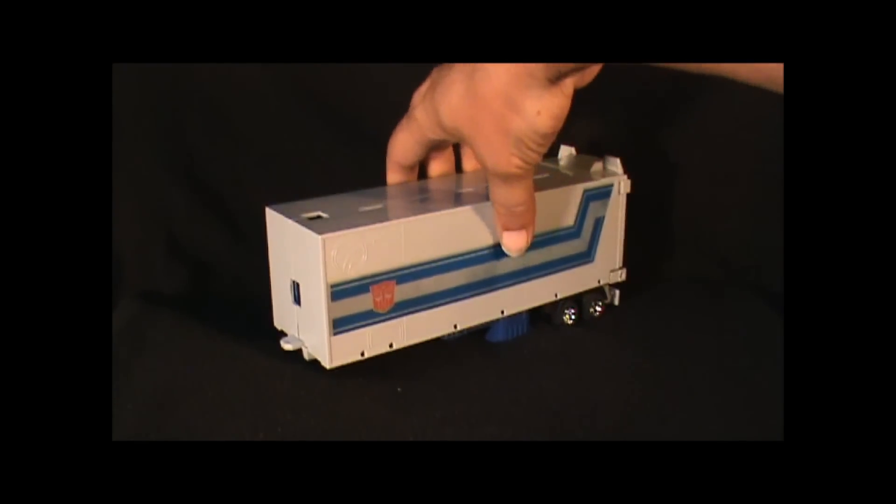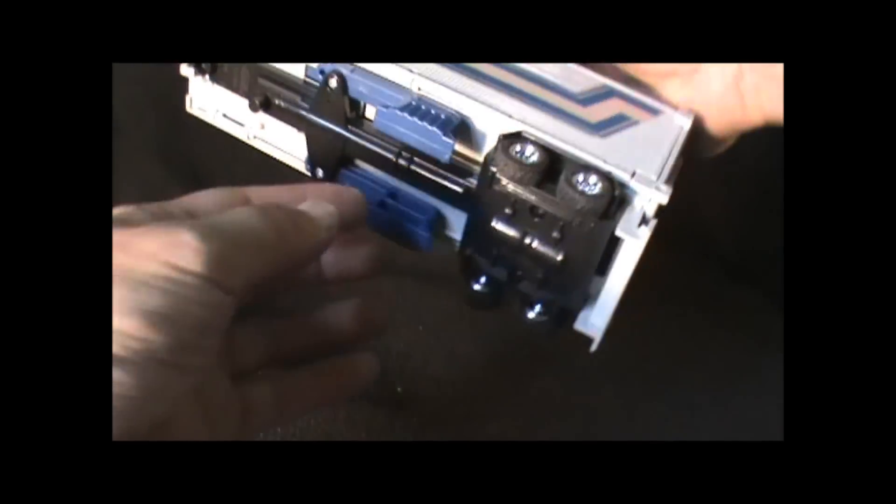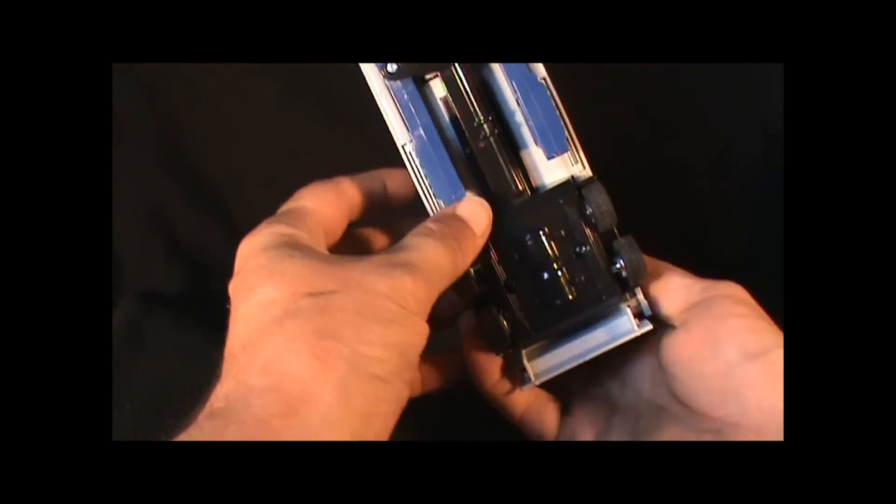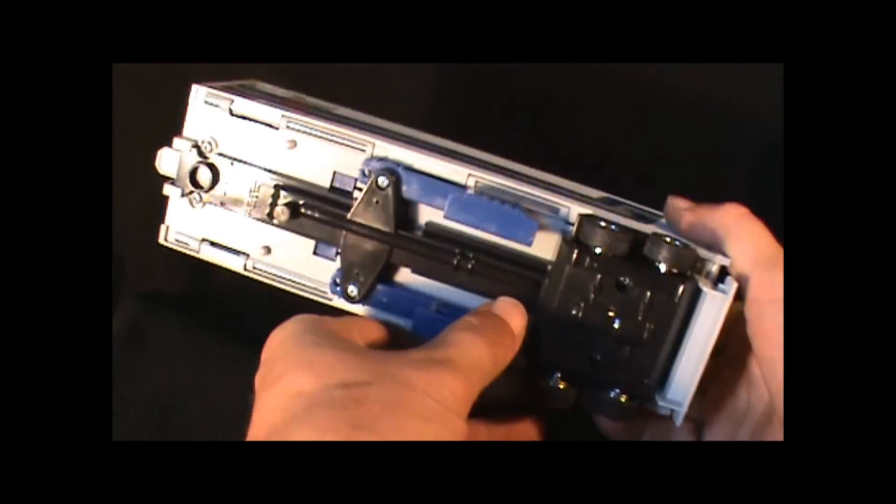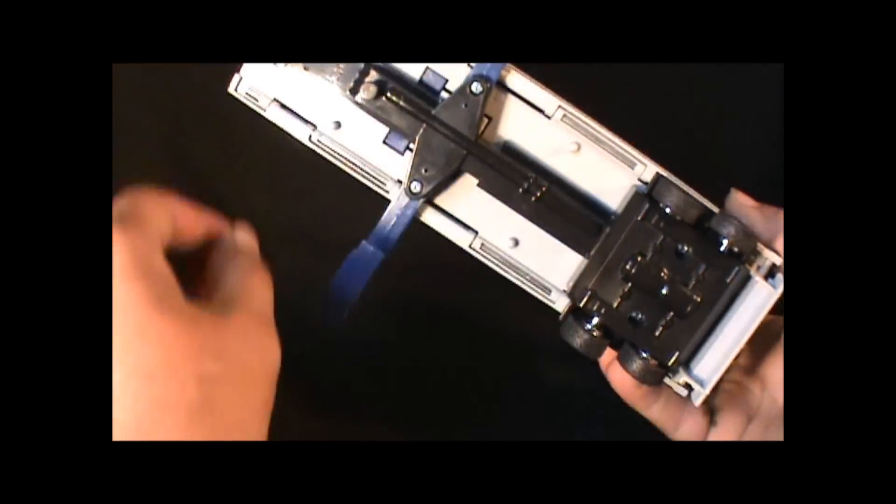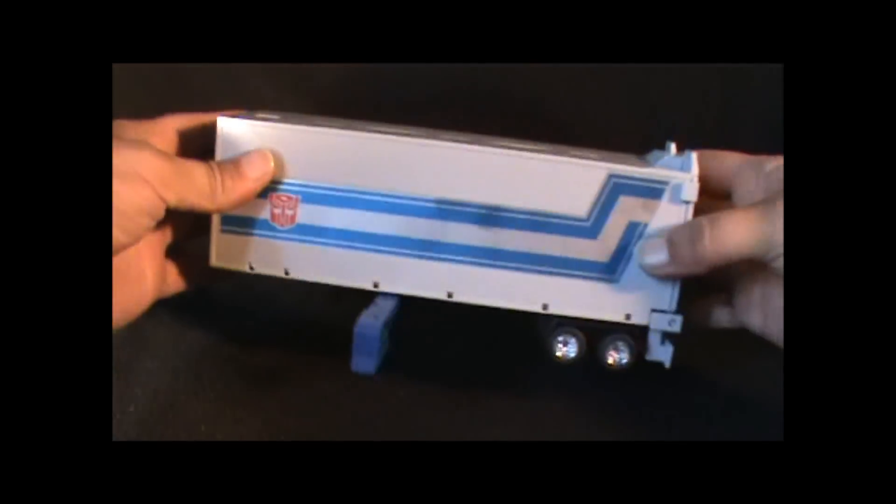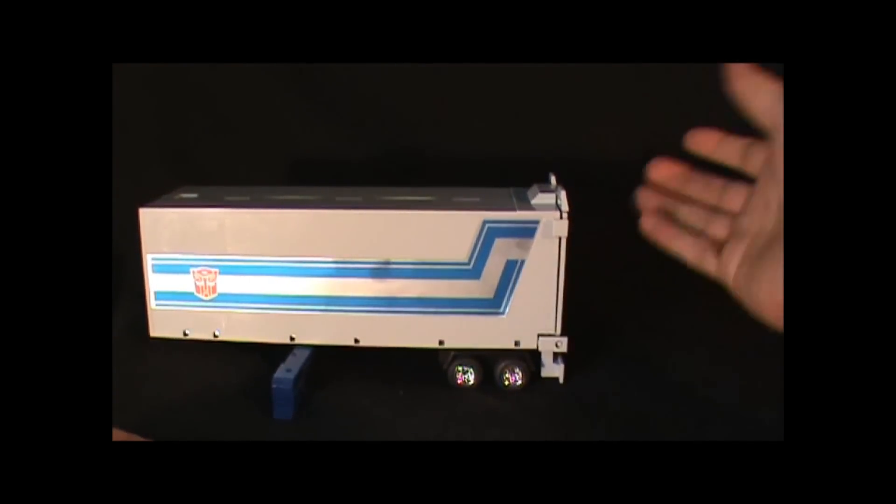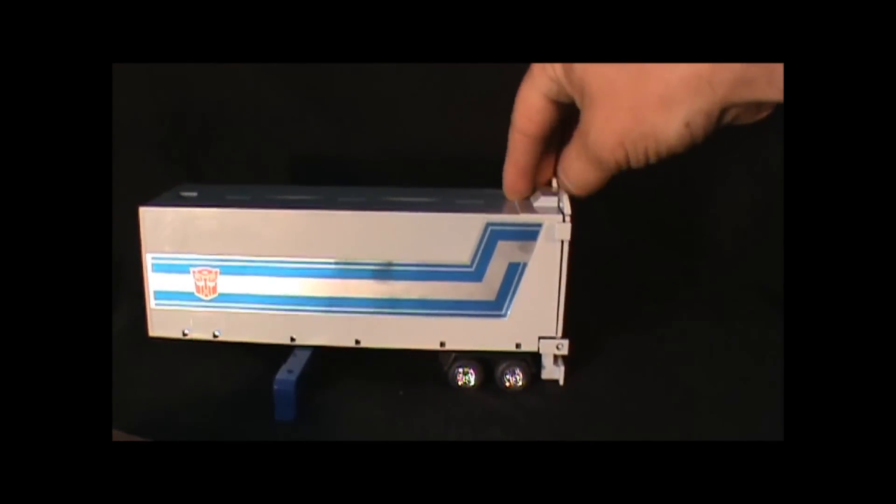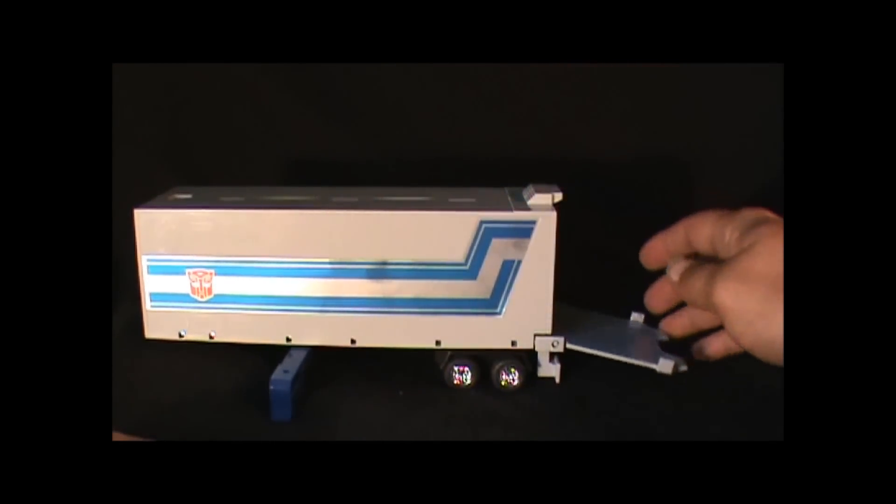So let's show you about this trailer. All right, see these two blue things? These act like legs, that's where you can pull them out, set it down, and you can pull down the tailgate for the trailer.